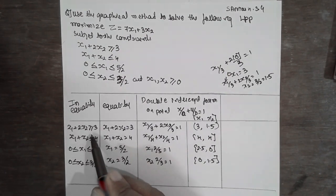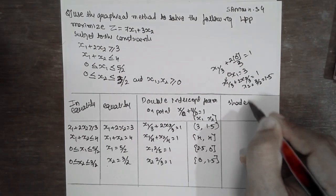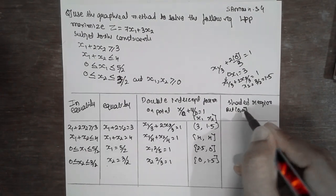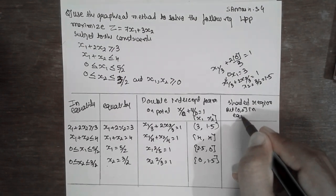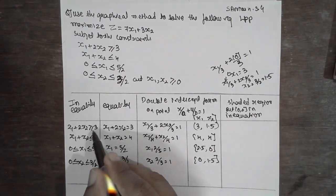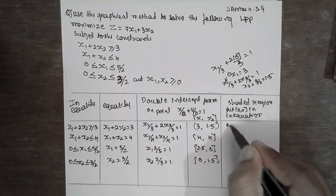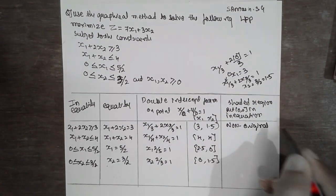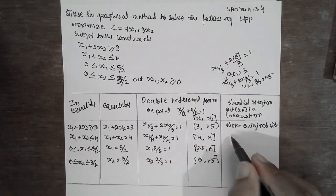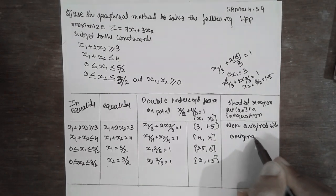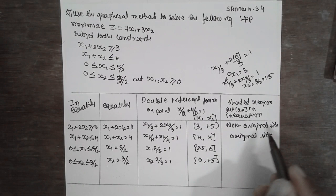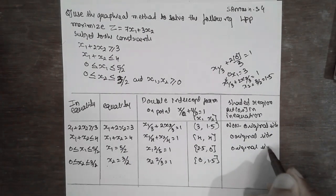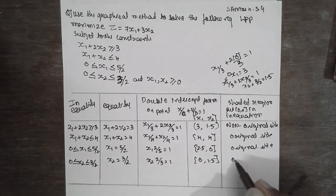Now, regarding the shaded region: if the inequality sign is greater than, shade the non-origin side; if it is less than, shade the original side. Based on this rule, the first constraint is non-origin side, and the remaining less-than constraints are all original side.